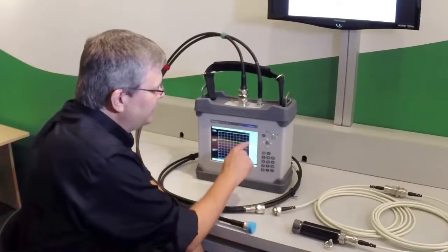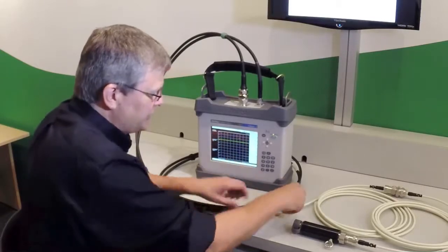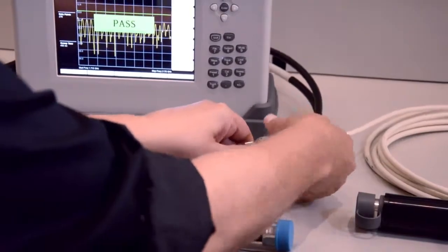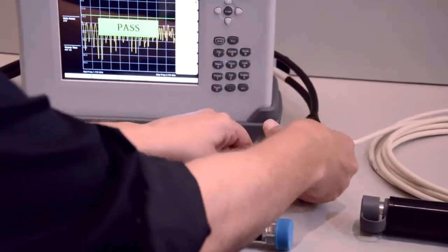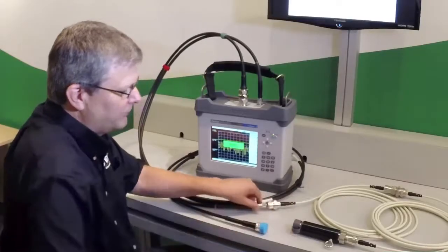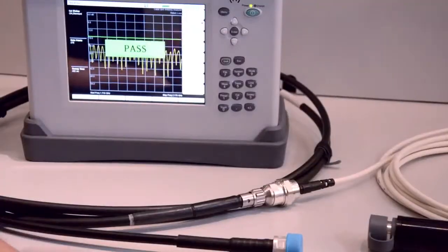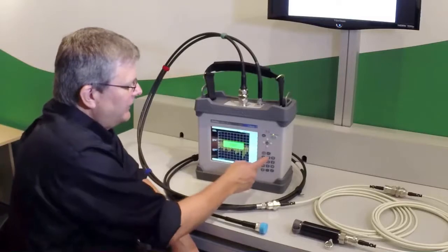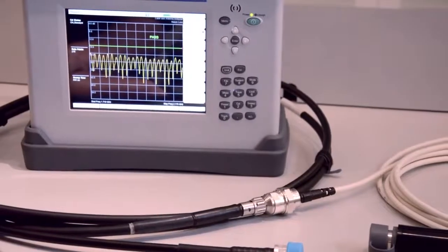The first thing we're going to do is do a quick return loss check of the system to see if this is a working system. Standard procedure says that you should always perform your sweep tests first before performing PIM tests. And so looking at this, I have a limit line set at minus 18 dB and we are passing, so we have a good system to start with.